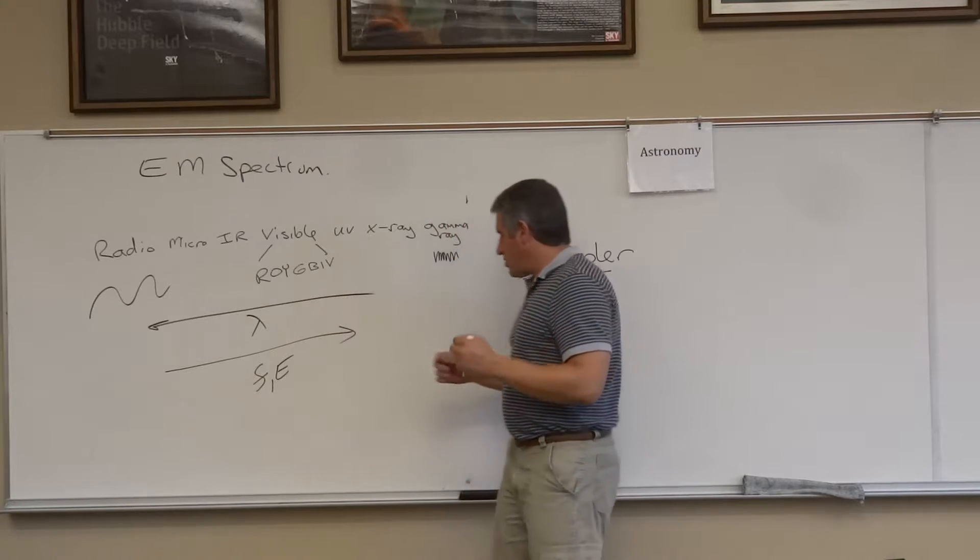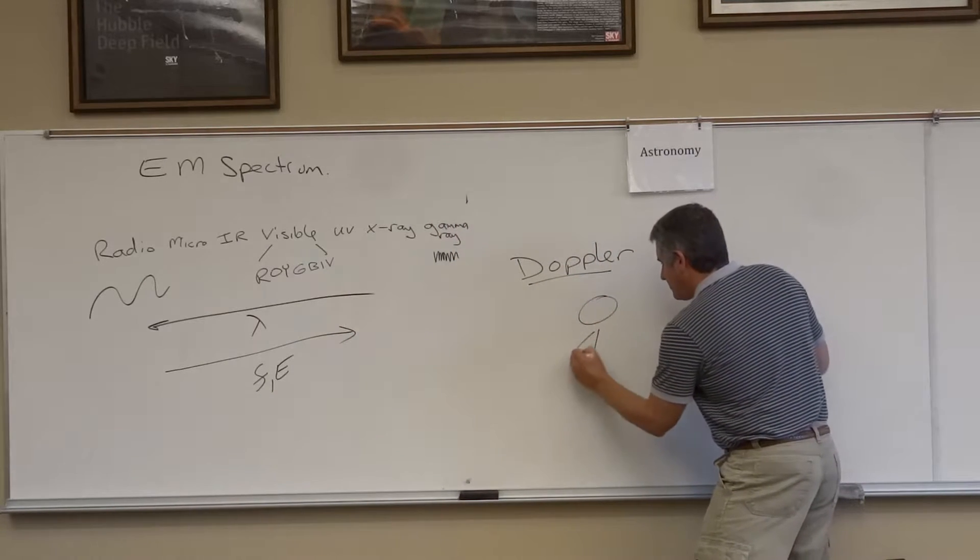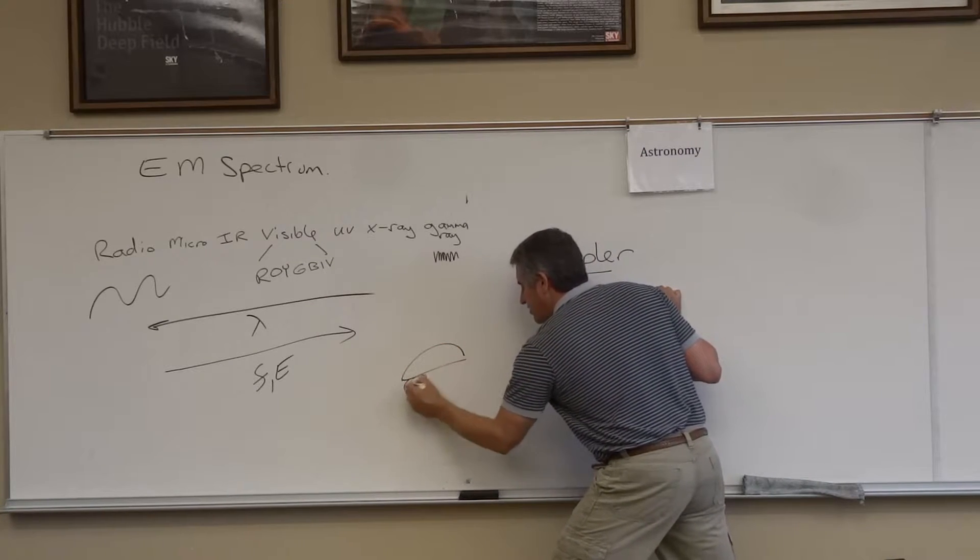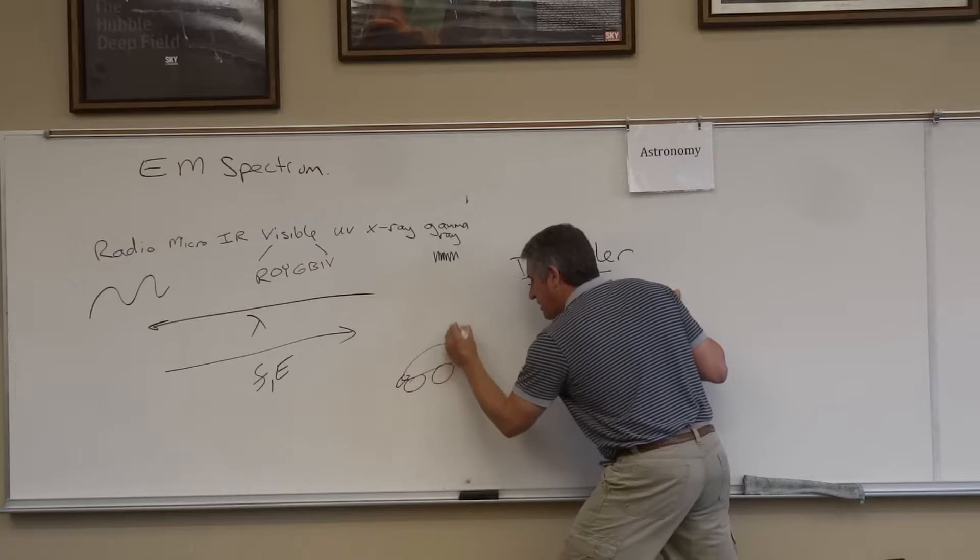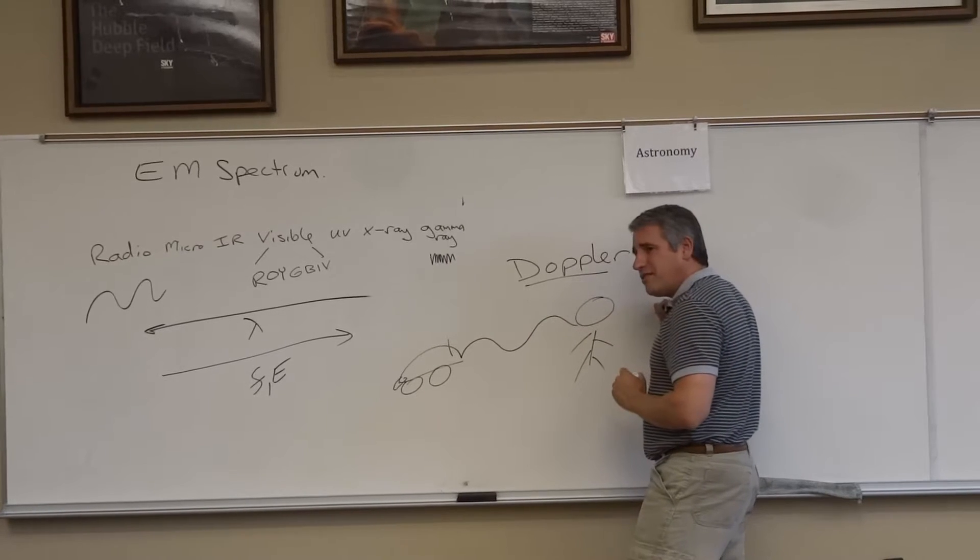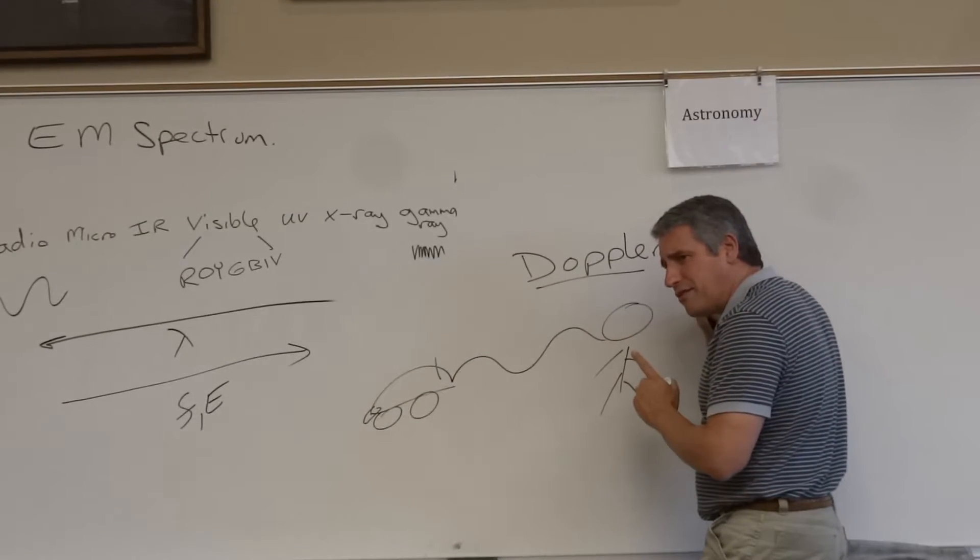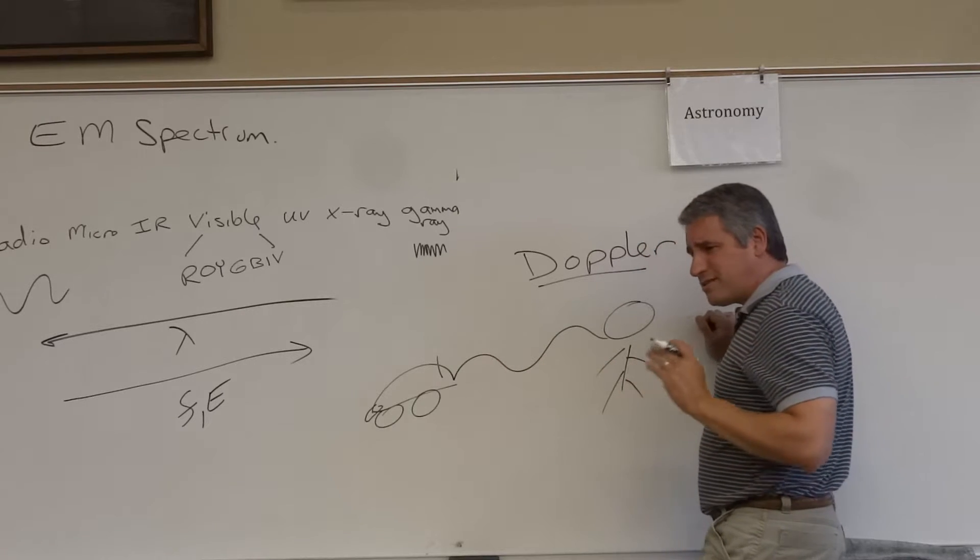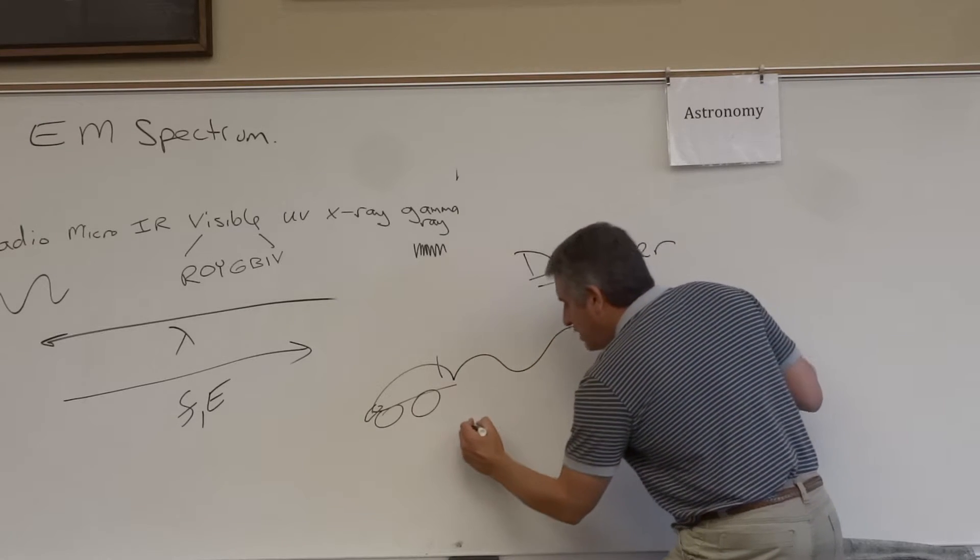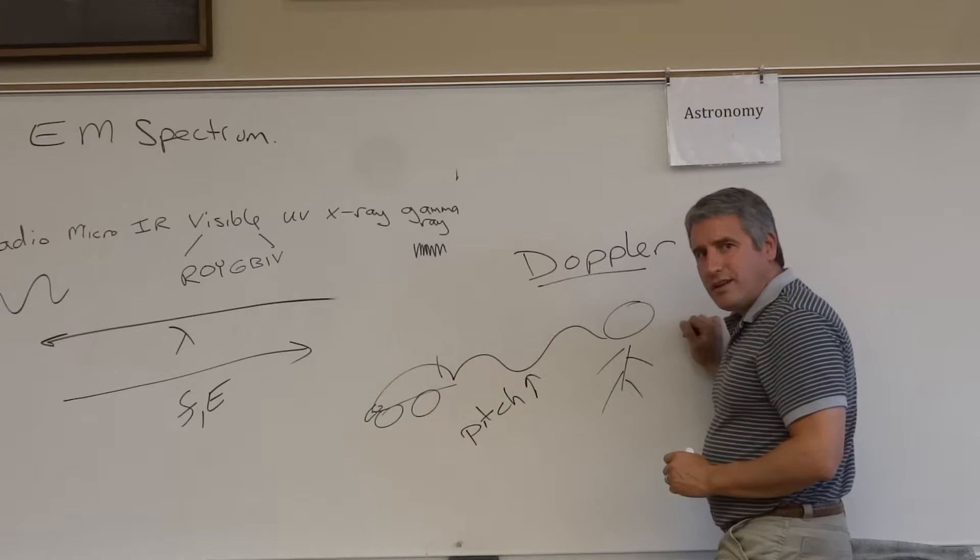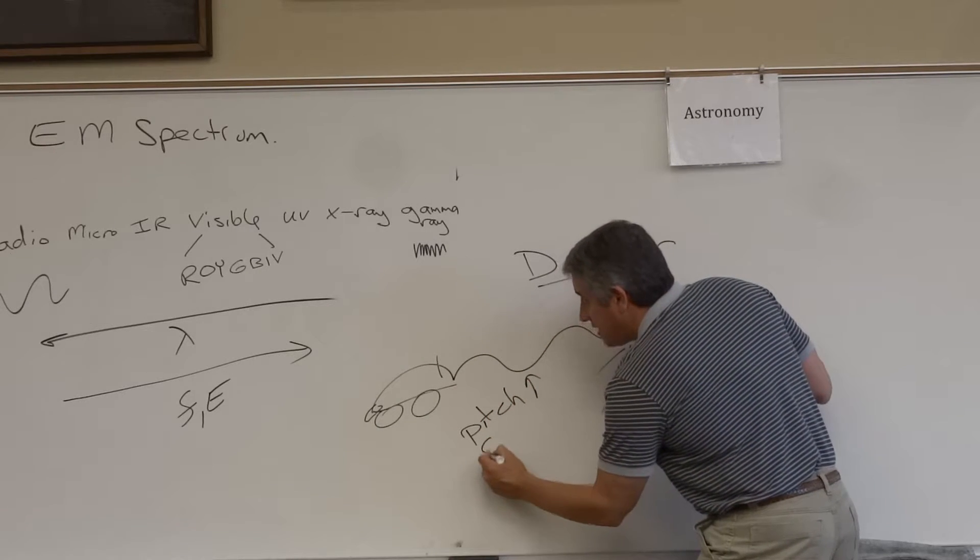So as a car moves towards us, here we are with the Doppler effect. We have a car, standard race car here, a little exhaust pipe, a little antenna to catch radio waves. It's producing a sound wave. As that car moves towards us, we hear an increase in the pitch. Another name for that is an increase in frequency.